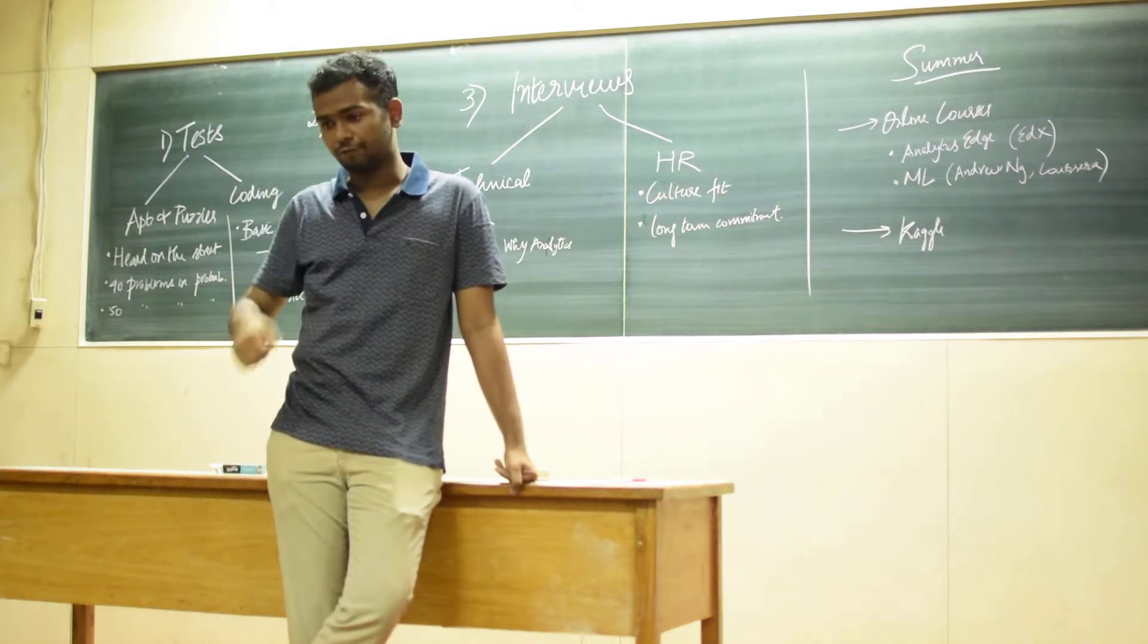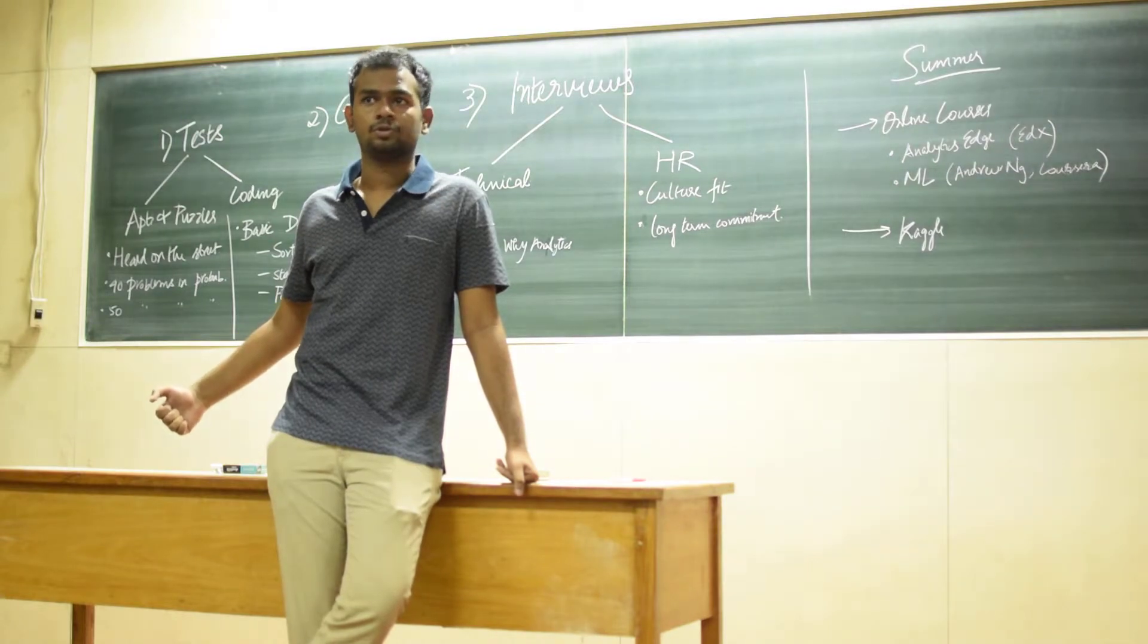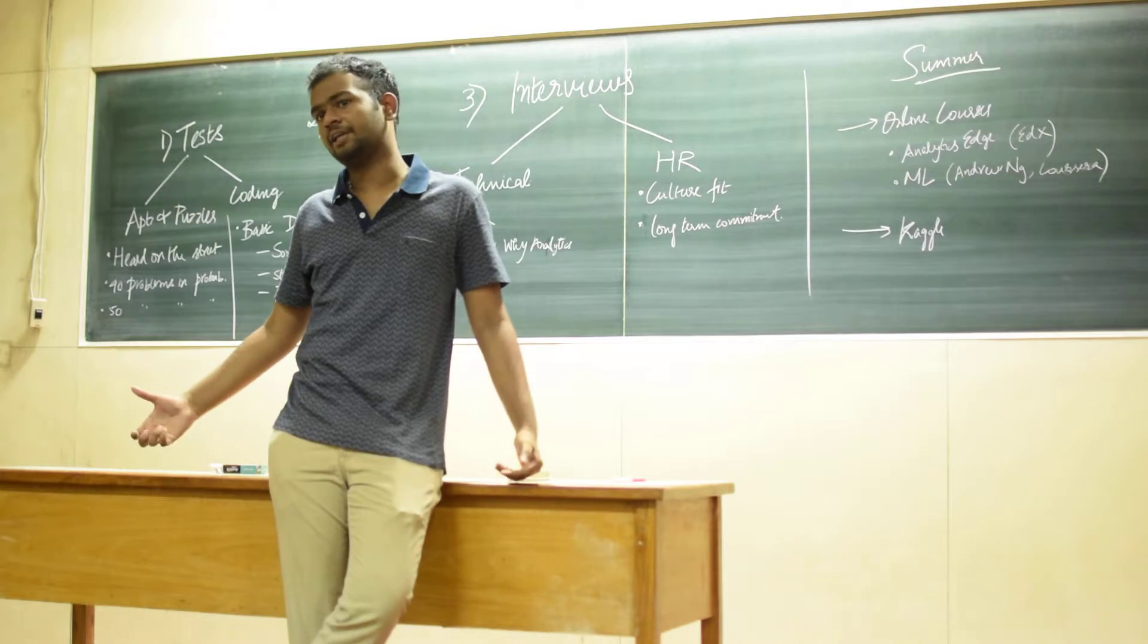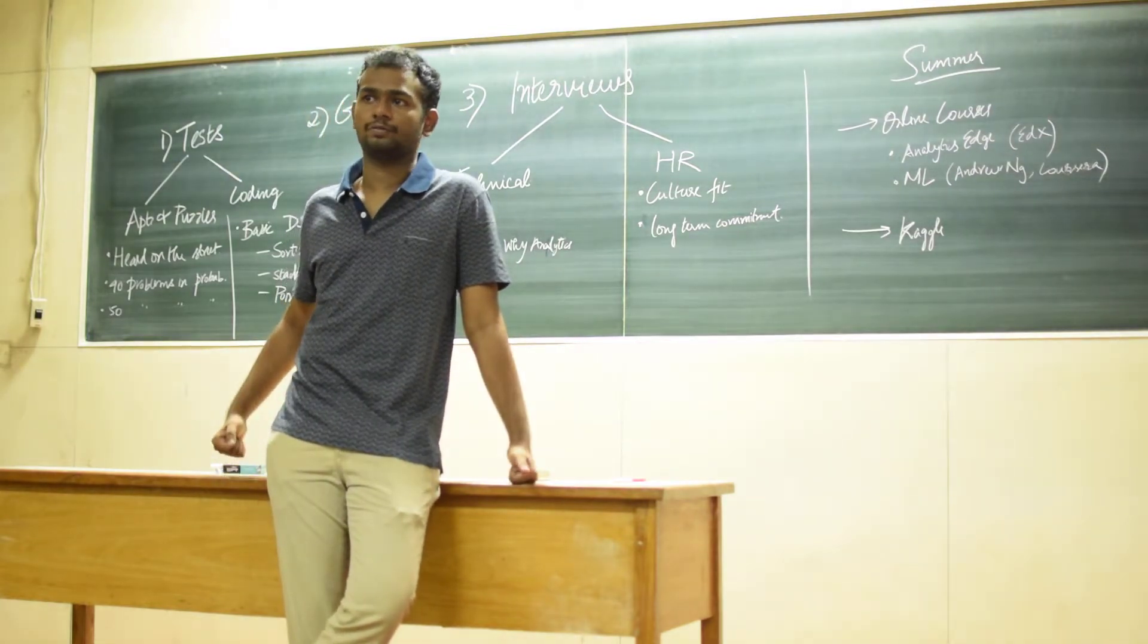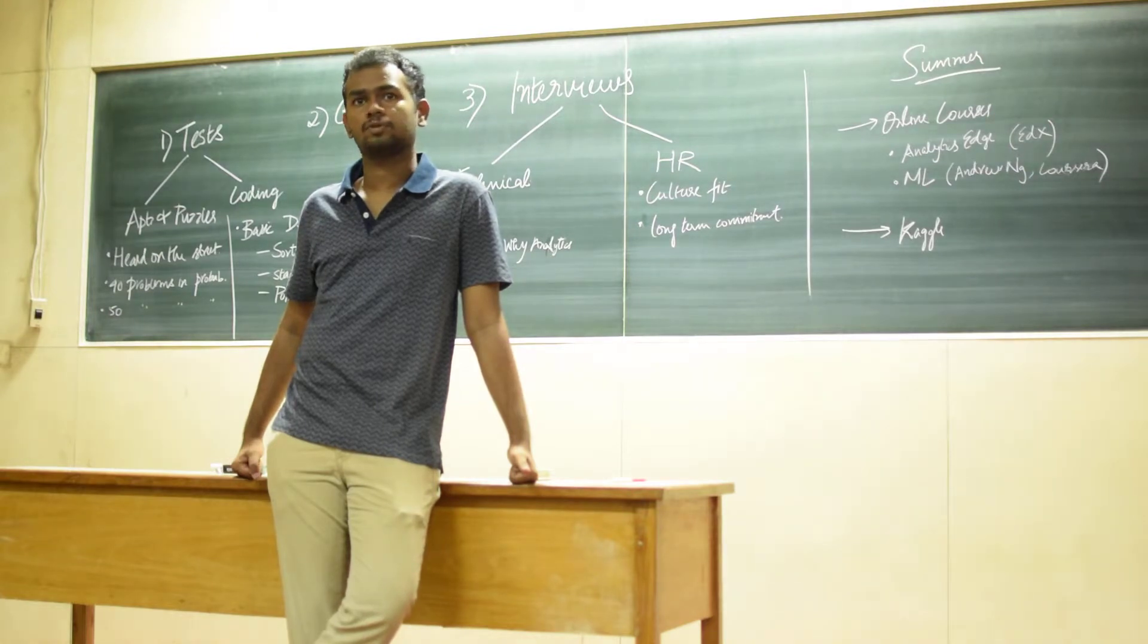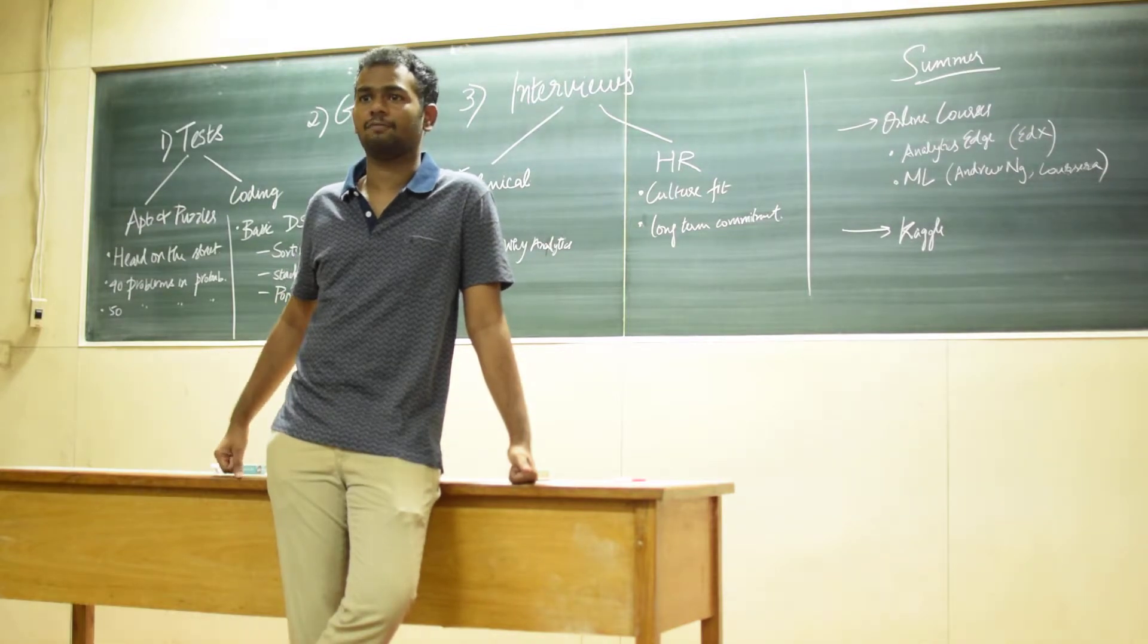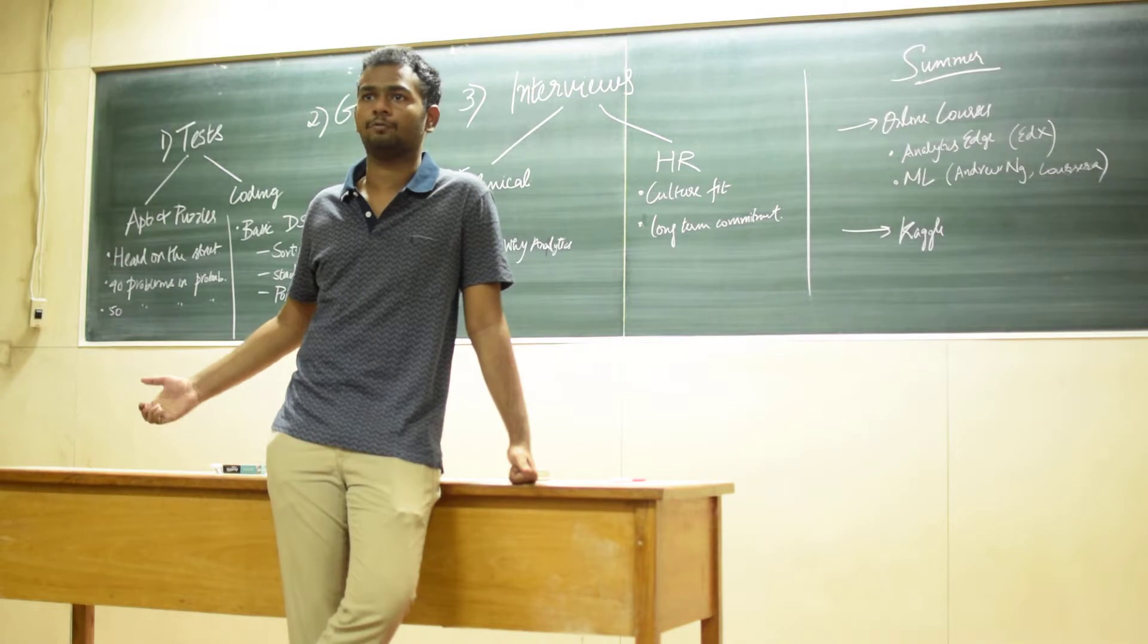Some companies do have a CG cutoff before the test. Some companies have it at 8, some at 7.5, and some companies shortlist the top 120 or so. Be aware of that, especially with the B.Tech batch sitting for placements. With the slight grade inflation, it's very likely that you might have a CG cutoff of even 8.3 or 8.4 for some companies.